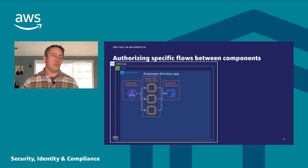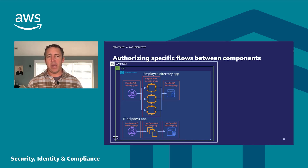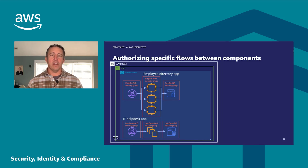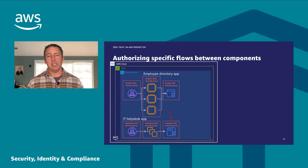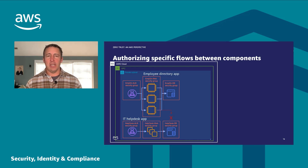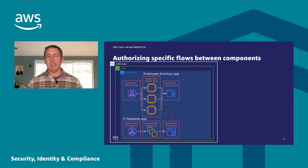With explicit references between security groups, the only thing that can talk to the database for a particular application are the compute resources associated with that same application. The only thing that can talk to the compute resources is the load balancer for that application, and everything else is implicitly denied. Layering another application with the same pattern gets you to a world where if traffic isn't explicitly authorized, it simply will not pass — a monumental lift above the pervasive east-west traffic flows that were previously the norm in a given on-prem subnet.